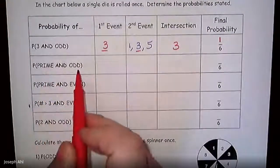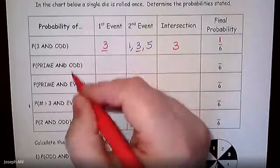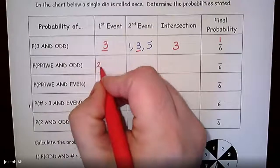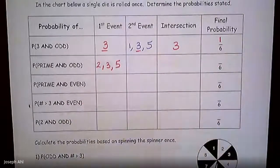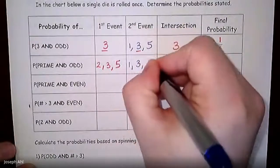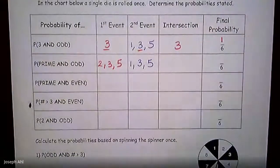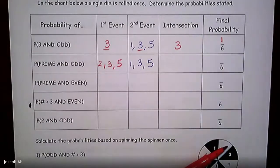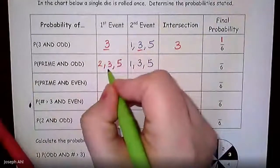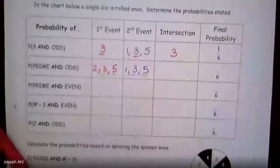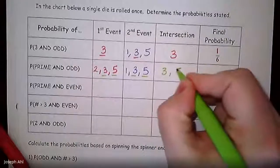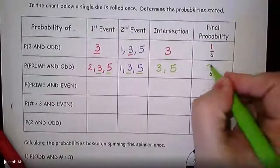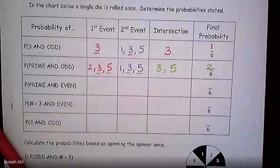Moving on to the probability of prime AND odd: the prime numbers on the die are 2, 3, and 5. The odd numbers on the die are 1, 3, and 5. The overlap between these two groups — the intersection — is the numbers 3 and 5. So we have 2 numbers out of 6 total on the die that would be both prime and odd. The 3 and the 5 are both prime numbers and both odd numbers.